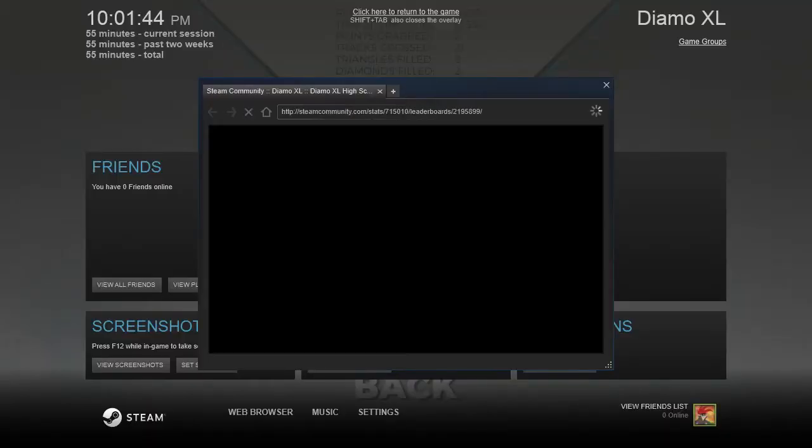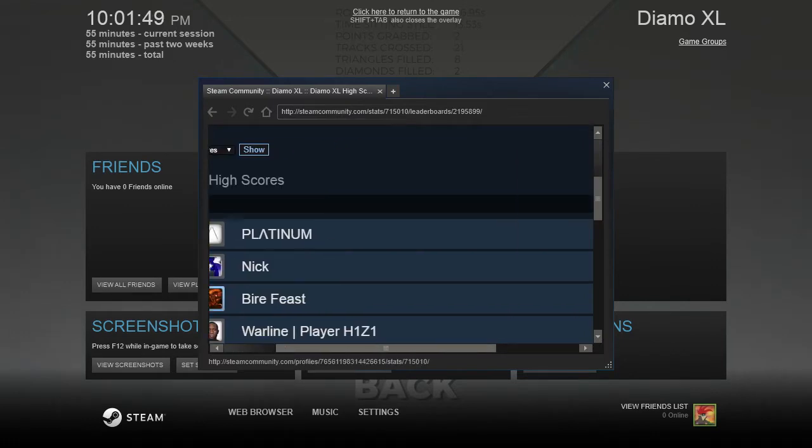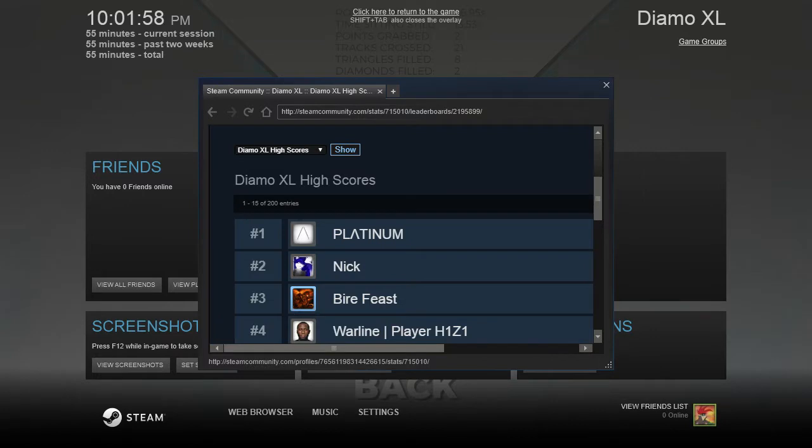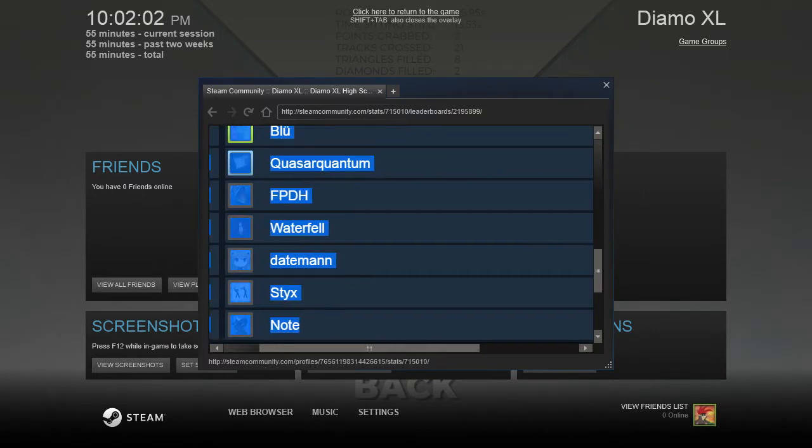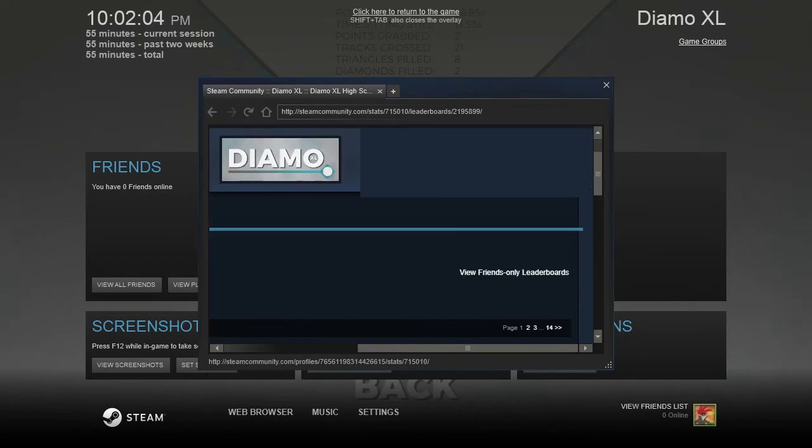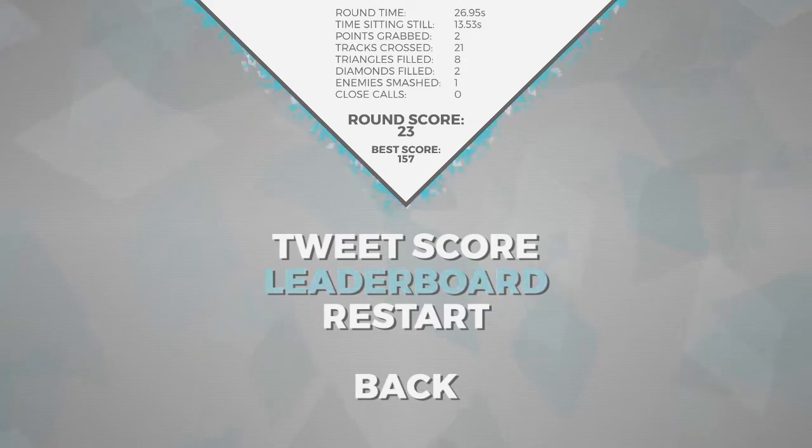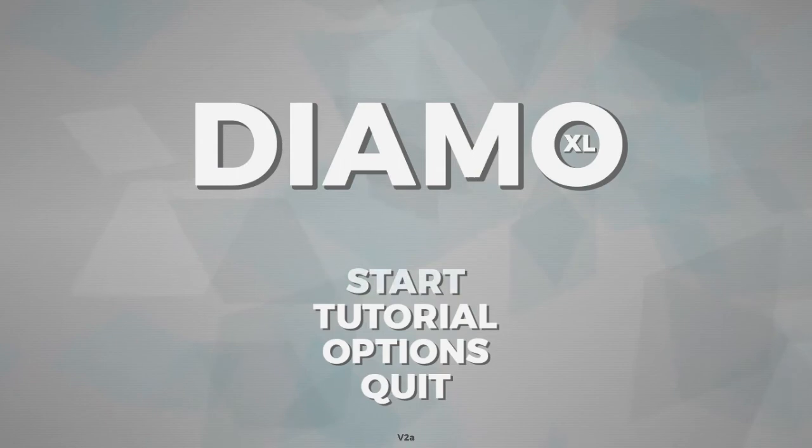Just out of curiosity, what does the leaderboard look like for this? Who has the highest score here? Platinum? Okay, you know what? That actually is believable. 2,407? Yeah, it's not a stupid number like 12 billion, like I saw in Geometry Wars 3. So there's no cheaters here. No cheaters whatsoever? Well, that's good. Good to know that people are at least playing by the rules in this game. Can't say the same thing about all the other leaderboards for the other games on Steam, unfortunately.